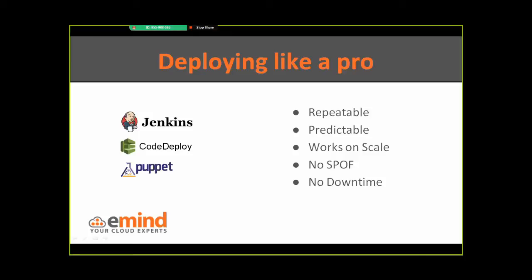It will be easy to use via the Jenkins UI. We do this using open source components freely available, like Puppet and Jenkins, together with the new CodeDeploy service by Amazon. CodeDeploy is a proprietary service by Amazon, but it's freely available and there's no additional charge for using it. This delivery pipeline is repeatable and predictable — it works on any scale and is designed to support zero downtime and no single point of failure.